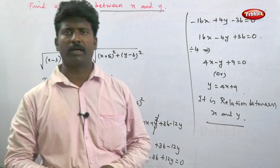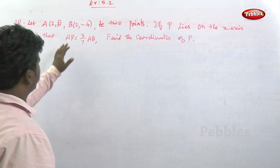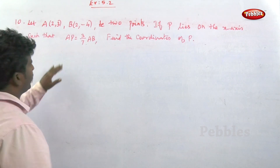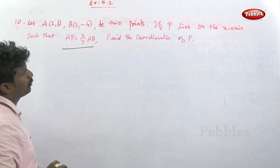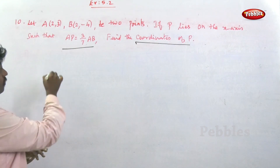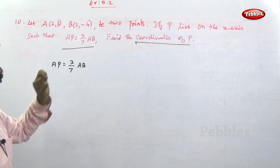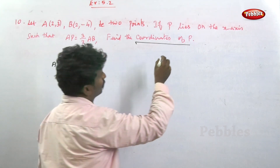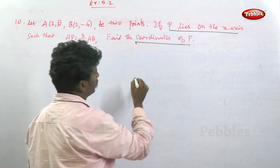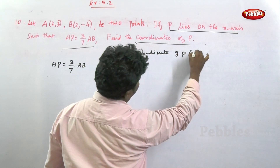Next problem, problem number 10: let A(2, 3) and B(2, -4) be two points. If P lies on the x-axis such that AP equals (3/7) AB, find the coordinates of P. Since P lies on the x-axis, the y-coordinate of P is 0, so P is (x, 0).